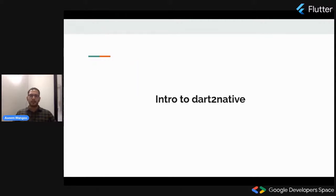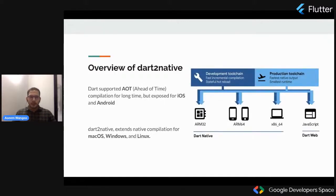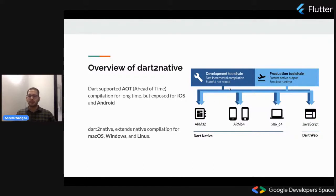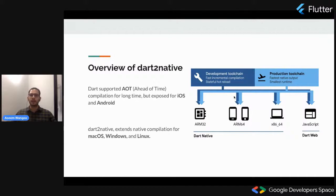Let's talk about dart2native. For a long time, DART has supported AOT compilation, but that was only exposed for iOS and Android. As we saw in a previous slide, DART uses a different compiler for development and a different compiler for production use cases. This functionality was exposed only for iOS and Android.